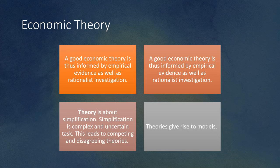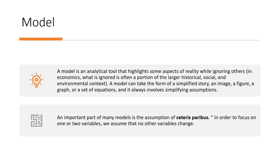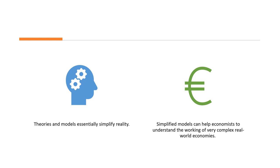A good economic theory is thus informed by both empirical evidence and rationalist investigation. Theory is about simplification, and simplification is a complex and uncertain task, which leads to competing and disagreeing theories. Theories give rise to models. A model is an analytical tool that highlights some aspects of reality while ignoring others. In economics, what is ignored is often a portion of the larger historical, social, and environmental context. A model can take the form of a simplified story, an image, a figure, a graph, or a set of equations, and it always involves simplifying assumptions. An important part of many models is the assumption of ceteris paribus — in order to focus on one or two variables, we assume that no other variables change.